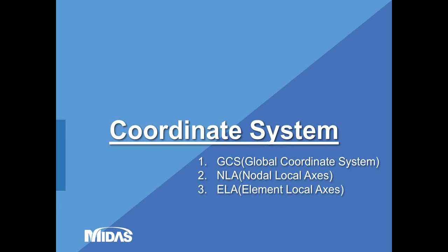There are three different coordinate systems: the Global Coordinate System, Nodal Local Axis, and Element Local Axis. The Global Coordinate System uses capital X, Y, Z axes of the conventional Cartesian coordinate system with the right-hand rule. You have learned this concept in engineering school, so I won't explain the basic concept. However, I will put more time on Node Local Axis and Element Local Axis — why MIDAS Civil invented these two additional coordinate systems, what they are, and how you can use them.